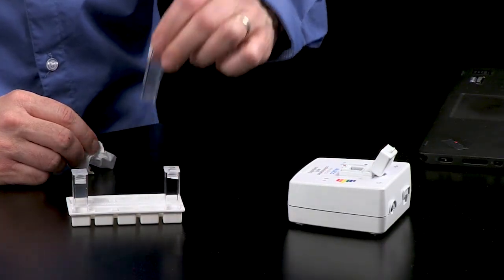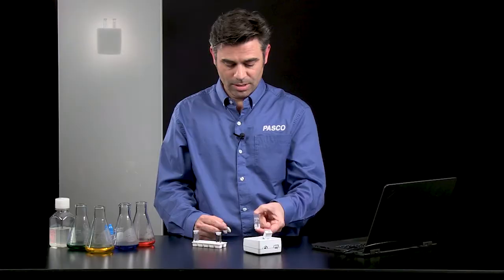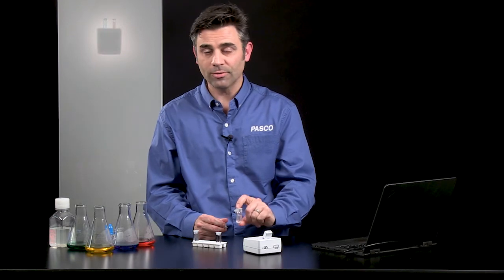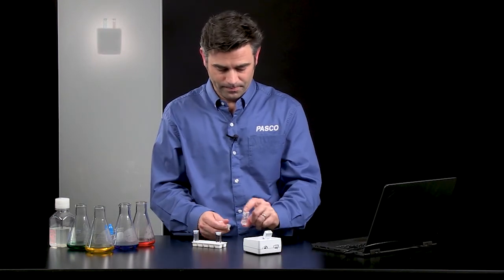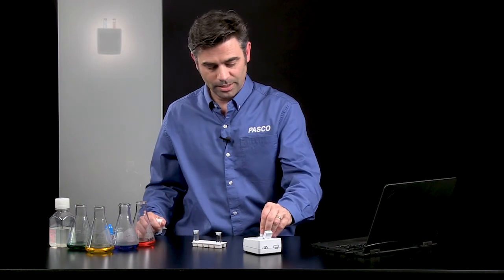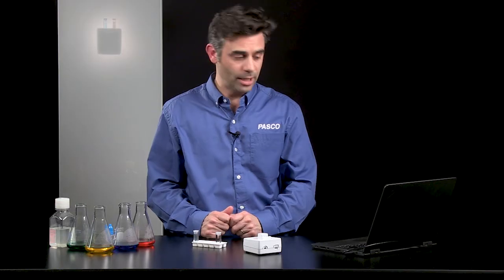I'm going to take my standard, my 100 NTU standard. I'm going to make sure it is mixed. There are instructions for mixing in the reference manual. I'm going to make sure the sides are clear. Put that in. And I'm going to calibrate. I get that check again, so I know calibration is complete.